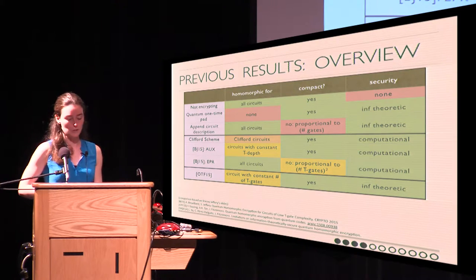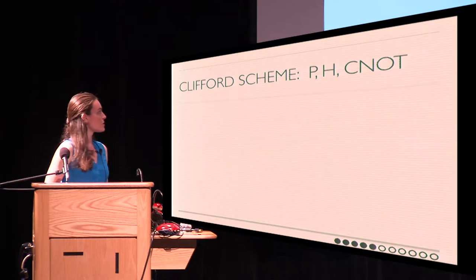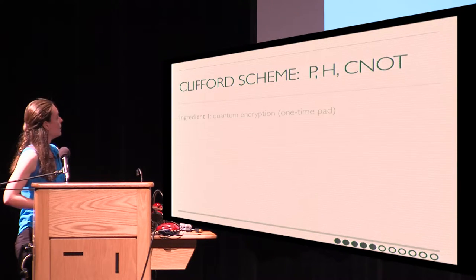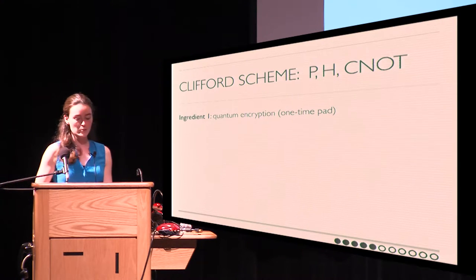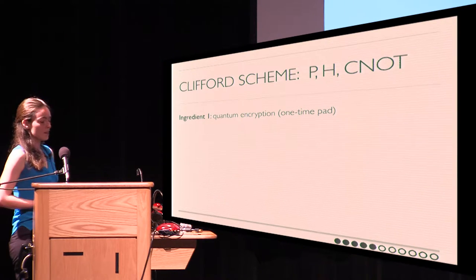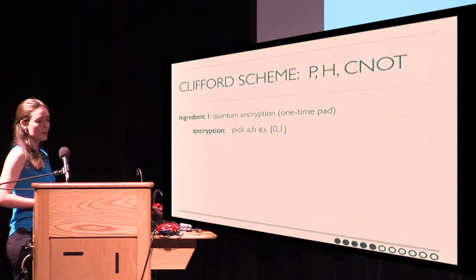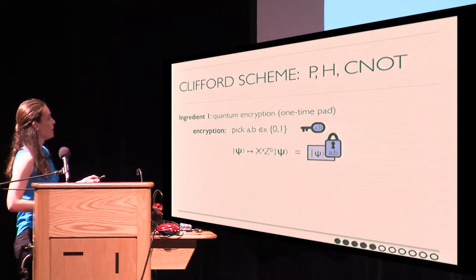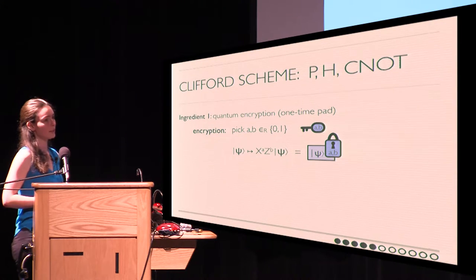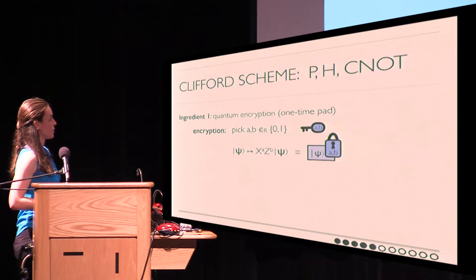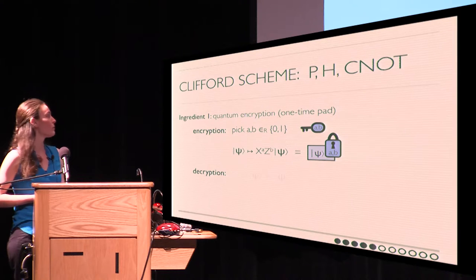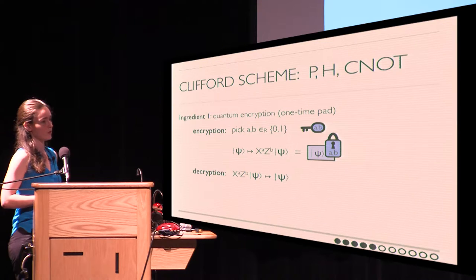I want to discuss the Clifford scheme in more detail. It's an encryption scheme that allows us to evaluate the P, H, and CNOT gates — the Clifford gates — using two ingredients. The first is a quantum one-time pad, really similar to a classical one-time pad. To encrypt, we pick two random bits A and B as our key, and then we encrypt the quantum state psi by applying a bit flip conditioned on A and a phase flip conditioned on B. This completely hides information about the quantum state. To decrypt, we apply the same operation again, and this cancels out because X and Z — the bit and phase flips — are their own inverses.